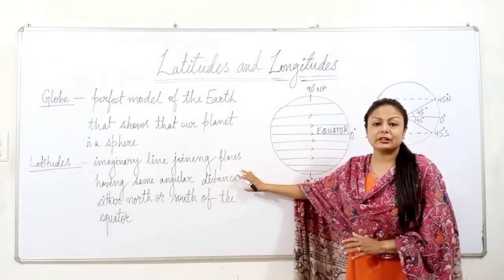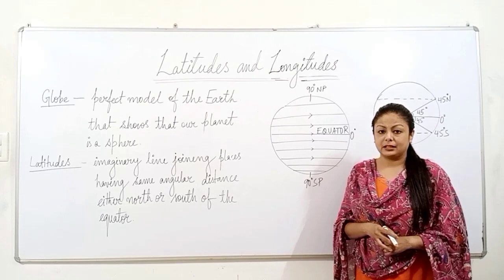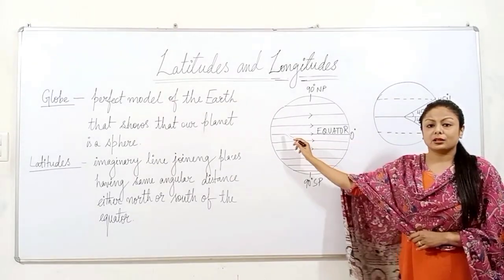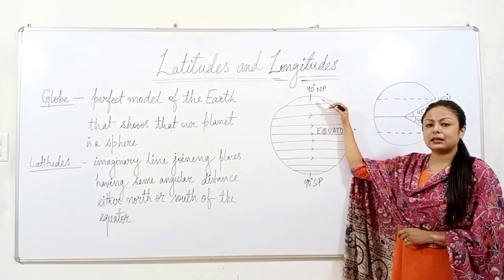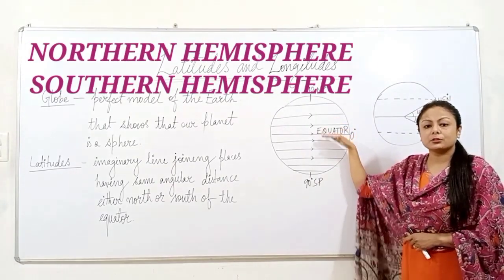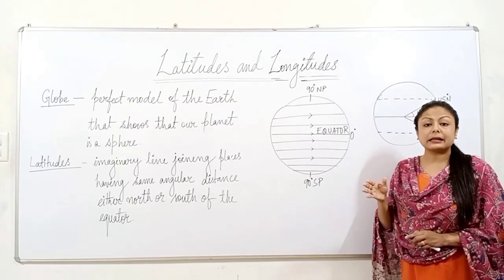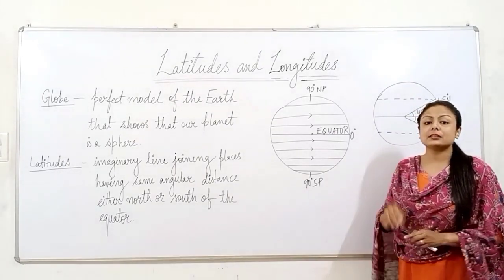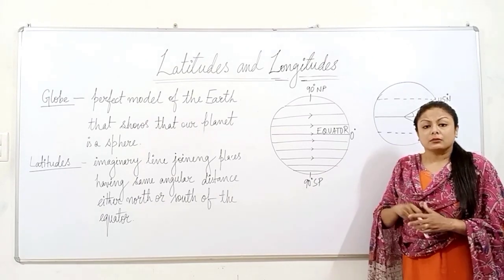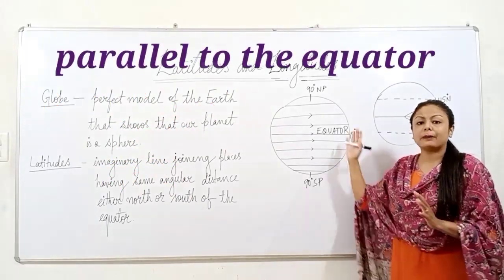Now we will see more about latitudes — we will learn about the characteristics. If you see in this diagram, you can see clearly that the equator is a line which divides the earth into northern and southern halves. The part above the equator is called northern hemisphere and the part below the equator is known as southern hemisphere. So we can say equator is the largest possible circle that can be drawn along the globe and it divides the earth into two hemispheres. Now, latitudes are horizontal imaginary lines and they are all drawn parallel to the equator.